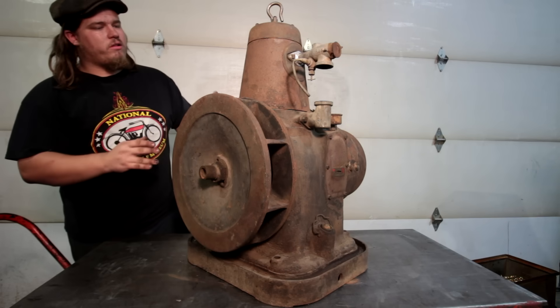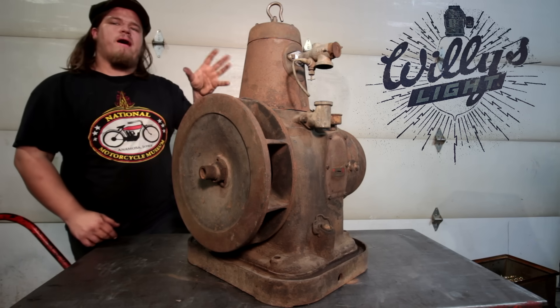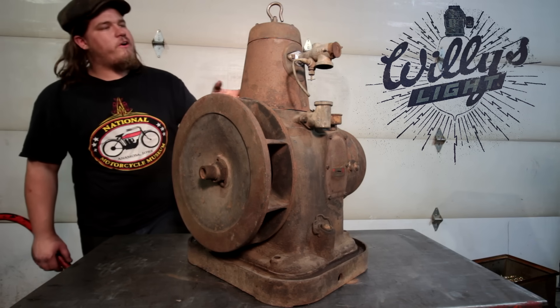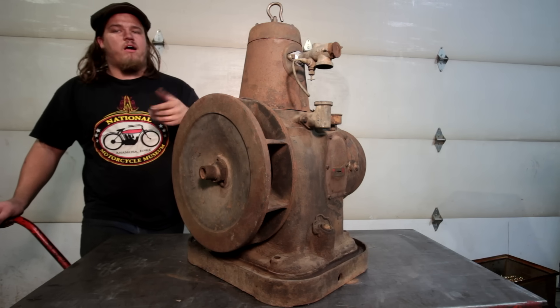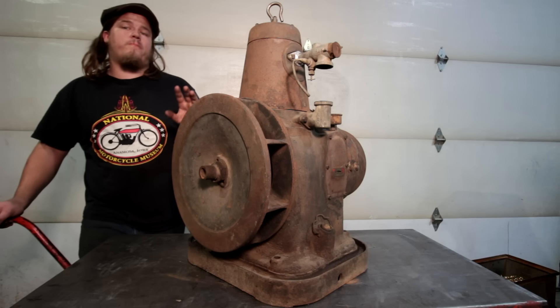This right here is an early 1920s Willys Knight power plant engine. This engine is very unusual as it is a four-stroke single-cylinder engine, but it has no valves, no rocker arms, and no push rods.